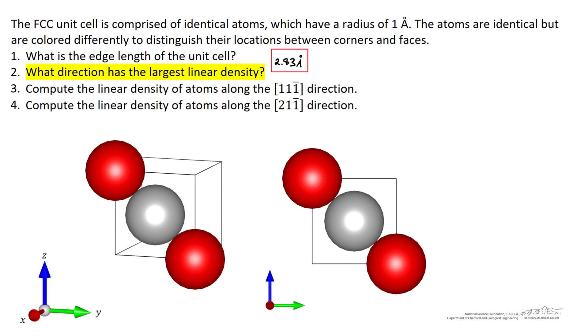The next question asks what crystallographic direction has the largest linear density? And there's a number of answers to this question. The thing to think about is that the highest linear density would be a case in which the atoms are touching. We see that occurring on the diagonals of each face of the cube.